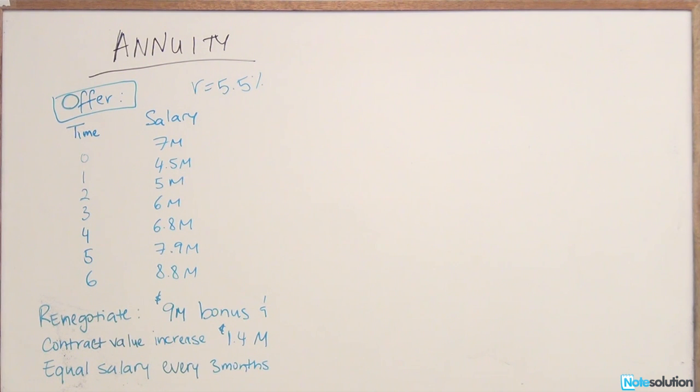Okay, so this is a hard level question. It relates to the concept of annuities. Basically, we're given a situation where you're a football player who's renegotiating his terms. So this guy got an offer for the salary structure.